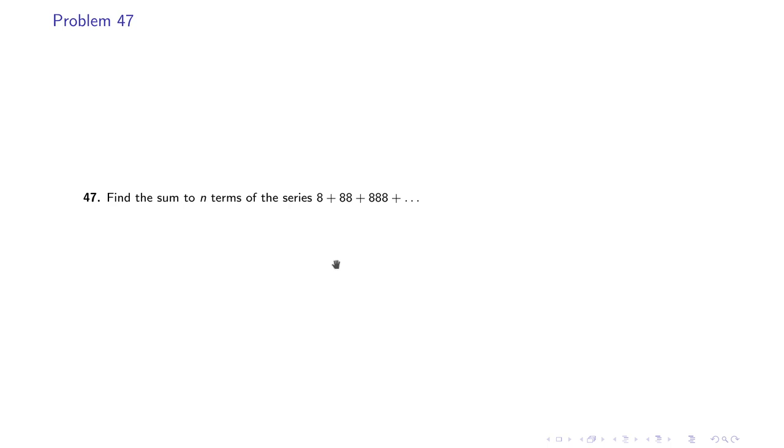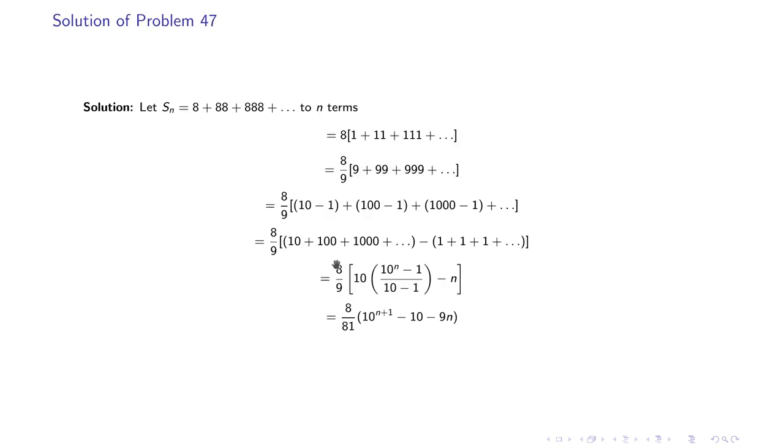Problem 47: Find the sum to n terms of the series 8 + 88 + 888 and so on. Now this is a moderately difficult problem if you don't know the trick. So the trick is that you take 8 common and then divide and multiply with 9. So the series will become (8/9)(9 + 99 + 999 + ...). So we can rewrite 9 as 10 - 1, 99 as 100 - 1, 999 as 1000 - 1.